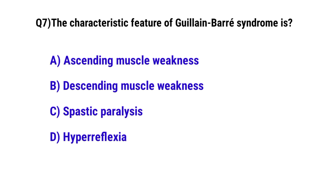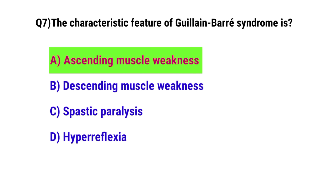Question No. 7: The characteristic feature of Guillain-Barré syndrome is — the correct option is A: ascending muscle weakness.